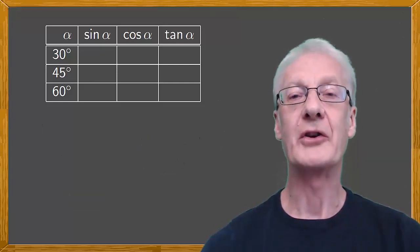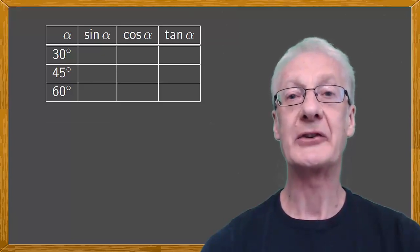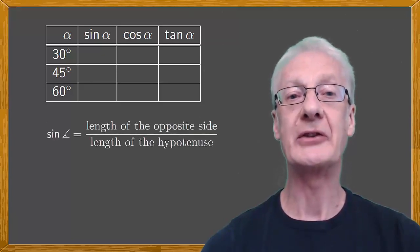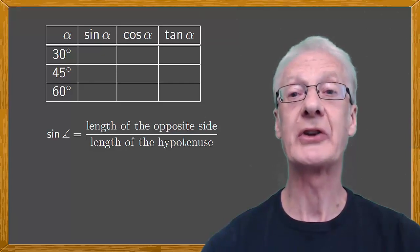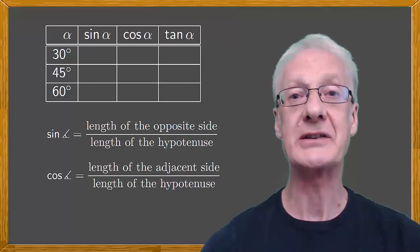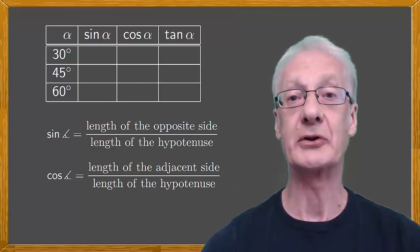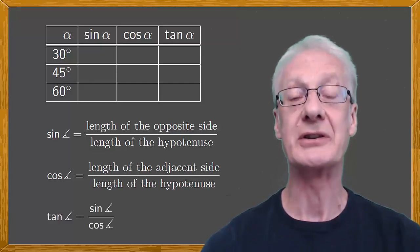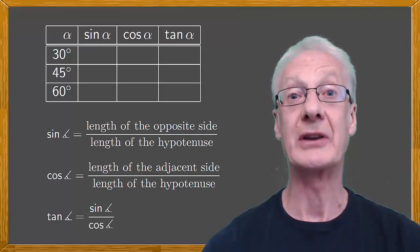Remember that for an acute angle of a right triangle, its sine is the length of the opposite side divided by the length of the hypotenuse. And its cosine is the length of the adjacent side divided by the hypotenuse. Finally, the tangent is the sine divided by the cosine of the angle.